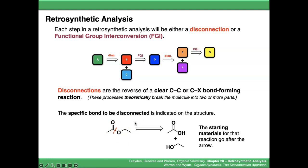Remember, a disconnection is a theoretical idea. When you're actually doing the reaction, that's the bond you're forming. The starting materials for that reaction go after the arrow. Quite often chemists will label the disconnection, either with the type of reaction it is, so this is a 1-2 substitution reaction,